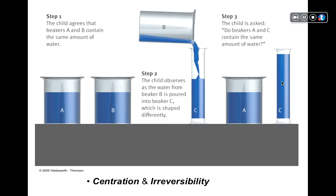Kids have trouble with conservation problems because of centration and irreversibility. Centration means they can focus on only one aspect of the problem at a time — they'll fixate on the fact that C looks taller and perseverate on that. Irreversibility is the inability to walk yourself back through the steps. As an adult, you can reason: we poured B into C, and A and B had the same amount at the beginning, therefore A and C are equal. Kids get hung up on one aspect of the problem and can't reverse the order of the steps.